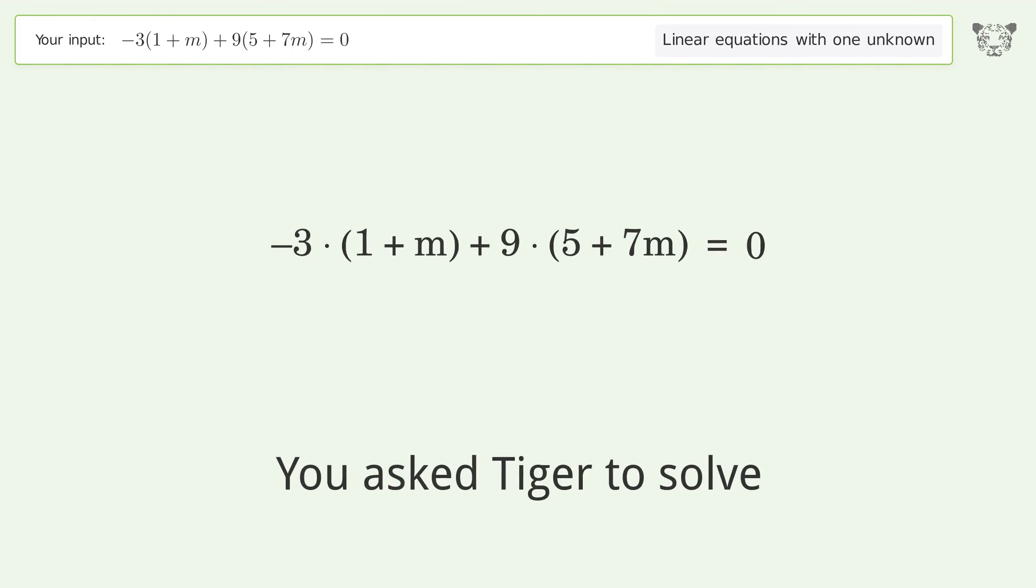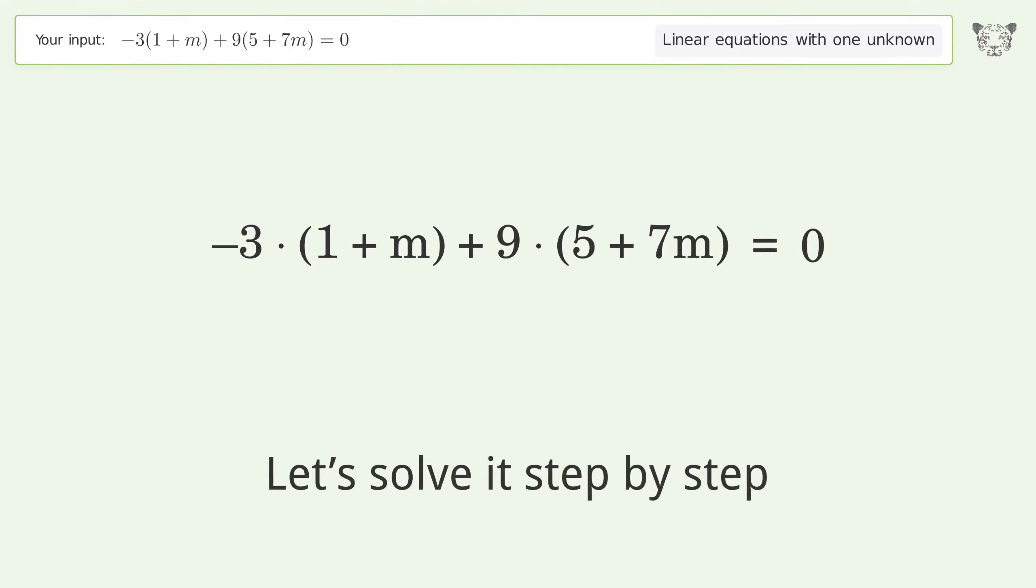You asked to solve this problem which deals with linear equations with one unknown. The final result is m equals negative 7 over 10. Let's solve it step by step.